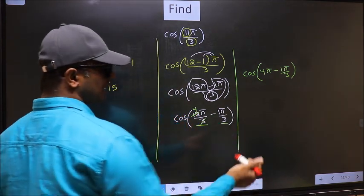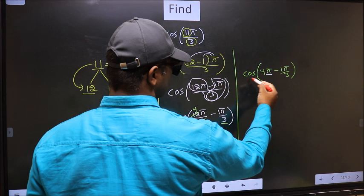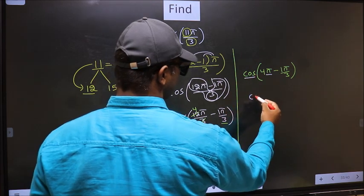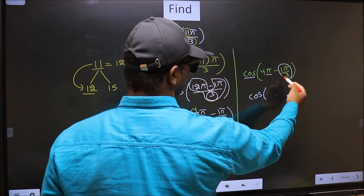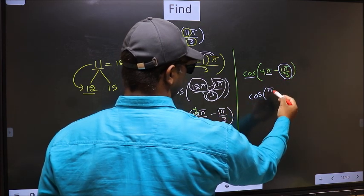Next, here we have pi. So cos is not going to change. It will remain cos. And inside, we get this angle, pi by 3.